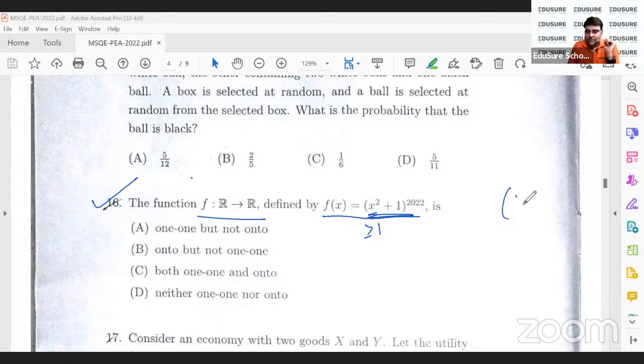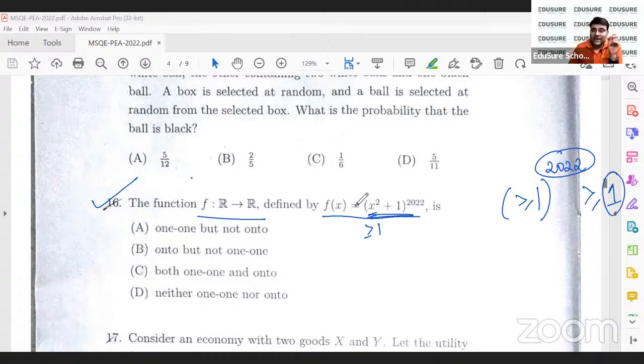And hence, some quantity greater than or equal to 1 to the power of 2022. This is an even number. So this overall will have to be greater than or equal to 1. Therefore, the range of this function will be basically from 1 to infinity.